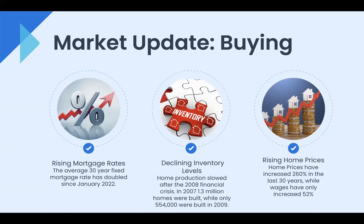Rising home prices are another factor — everything kind of factors into this as well. In general, home prices have increased 260% in the last 30 years, while wages have only increased by about 52%. So it really does put a hamper on our traditional model of working with buyers and sellers.